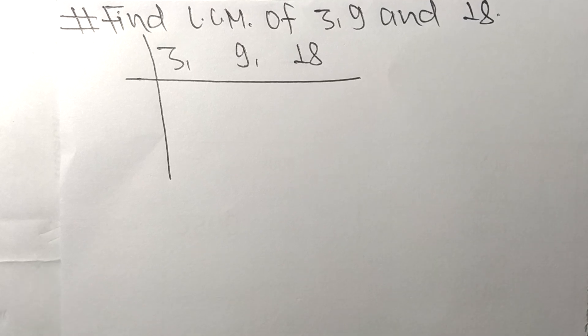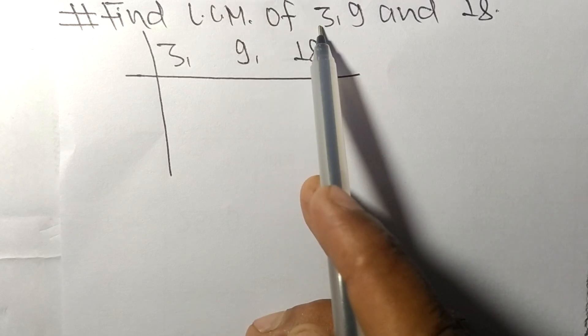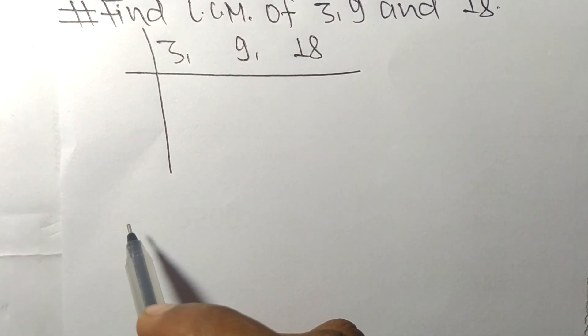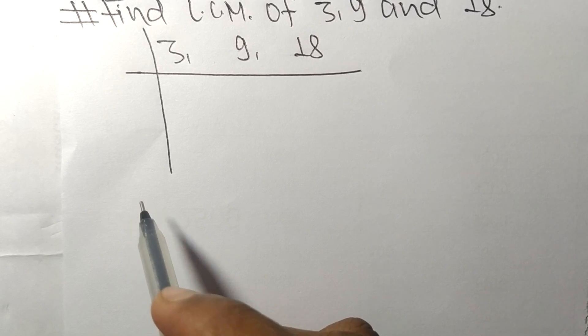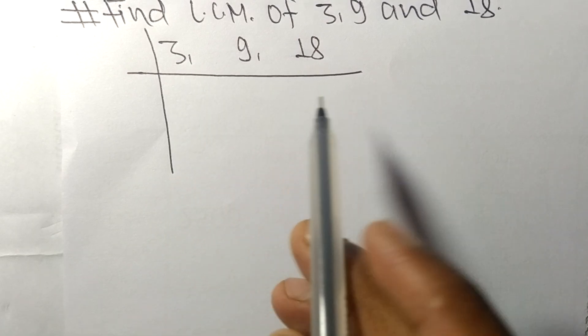So today in this video we shall learn to find the LCM of 3, 9, and 18. To find LCM, we have to choose the lowest number that can exactly divide at least any two of these numbers.